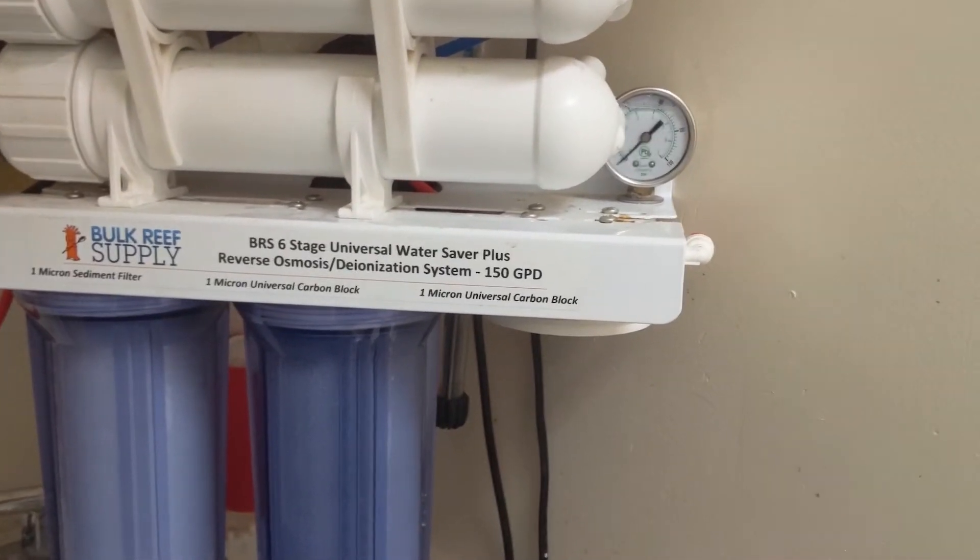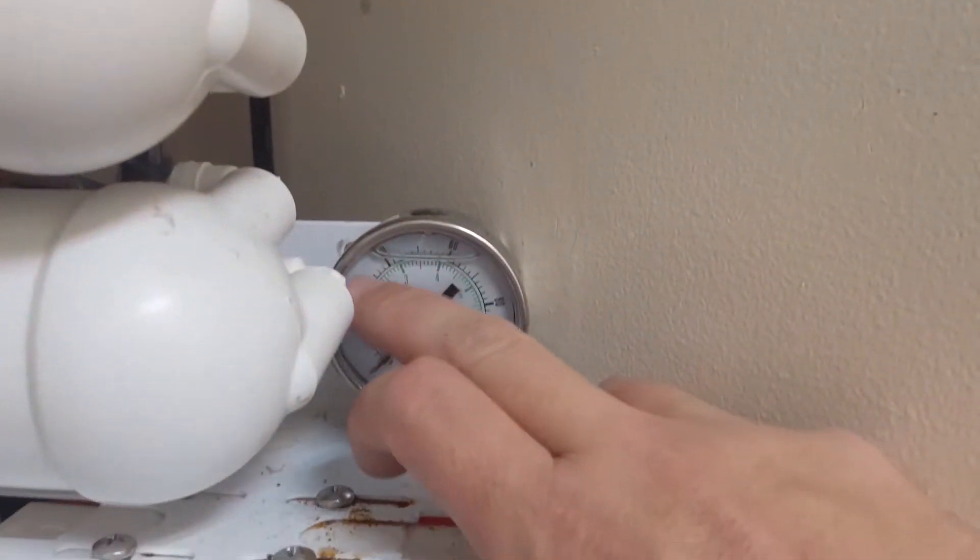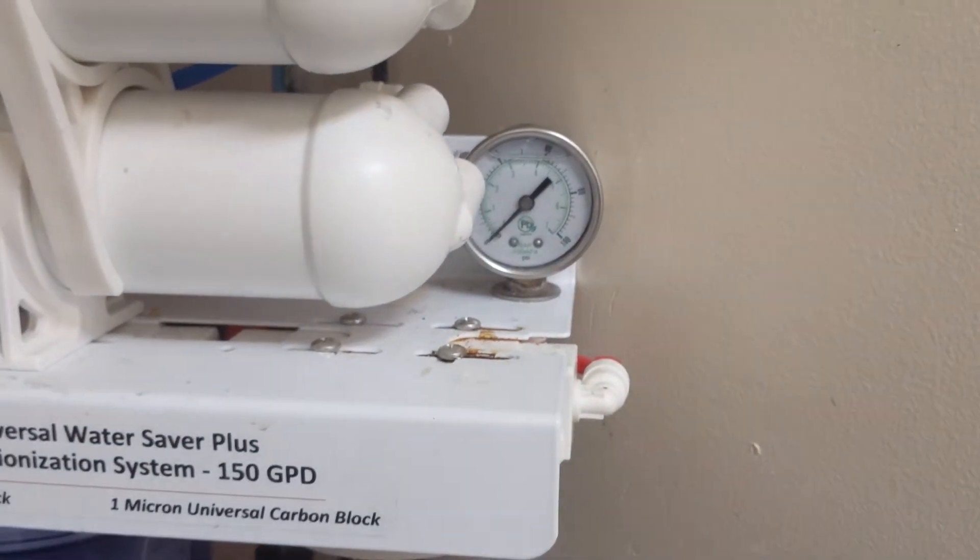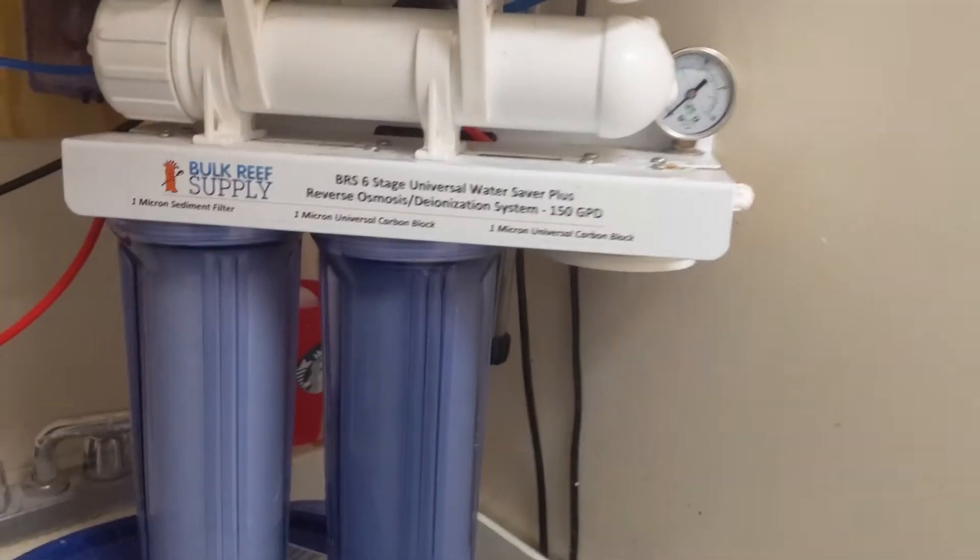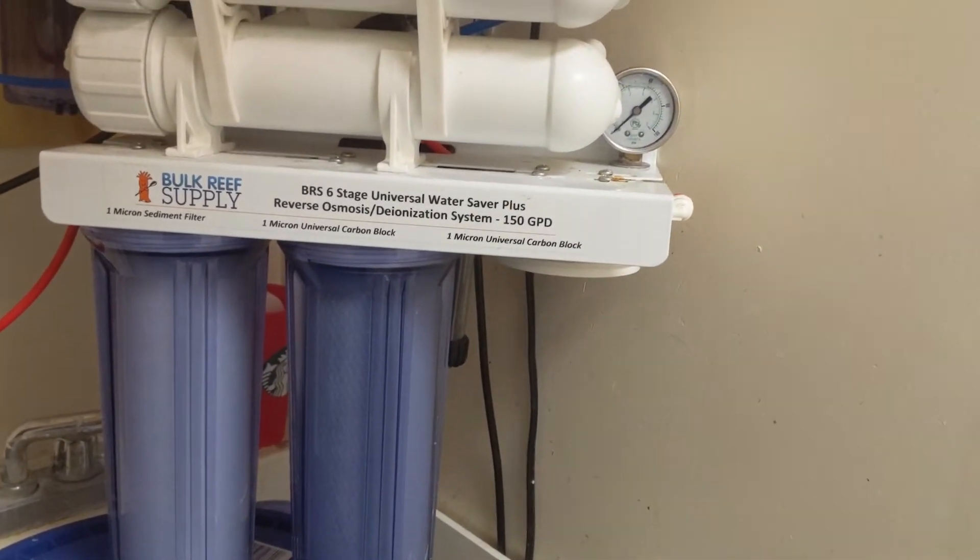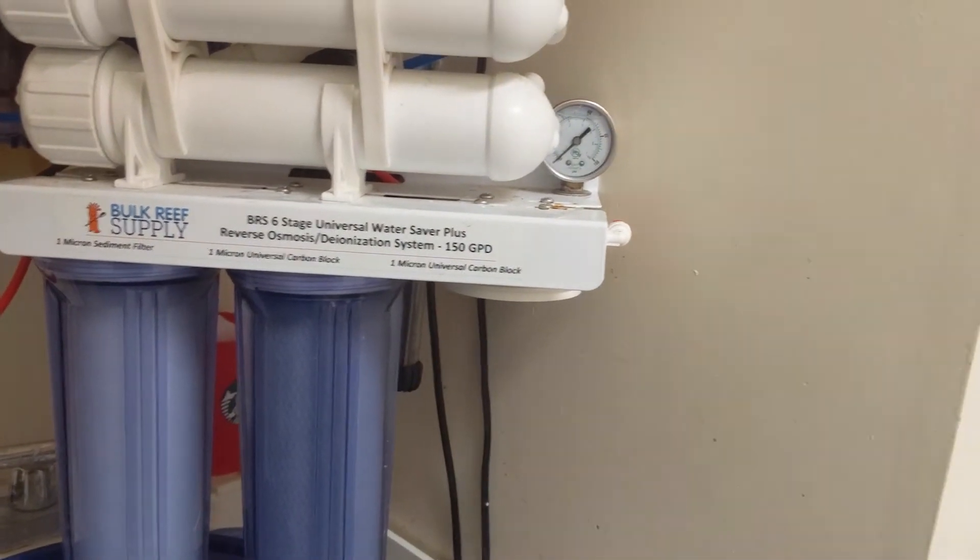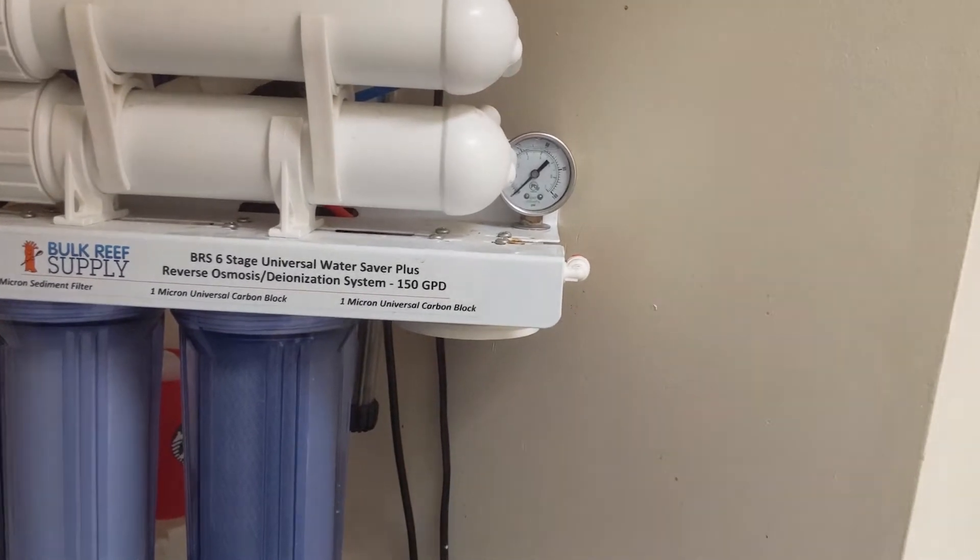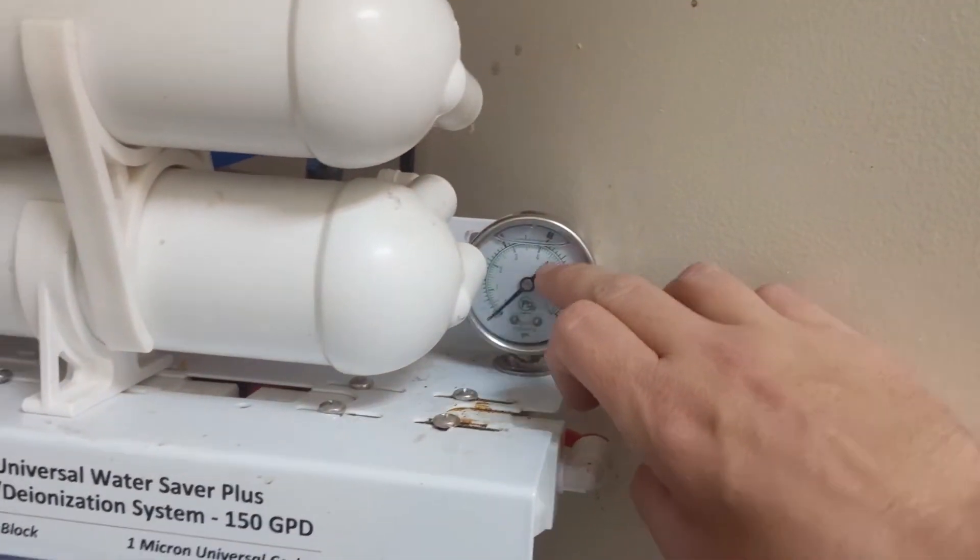But my pressure gauge is bad, and this is really important because you want good pressure to make RODI water. The reason why it's important for me is I'm on a well, and if a lot of things are calling water, my overall pressure might be low.